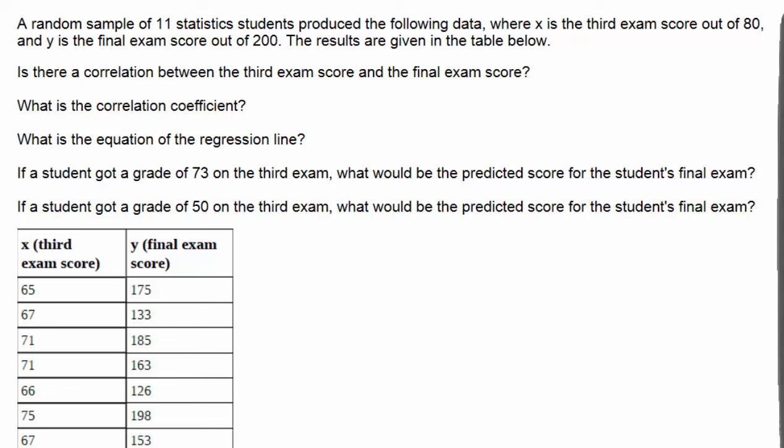We will answer the first question as to whether or not there is a correlation between the third exam score and the final exam score by doing a hypothesis test in which the null hypothesis is rho equal to 0, where rho, the Greek letter R, stands for the correlation coefficient equaling 0. Rho not equal to 0 is the alternative hypothesis.